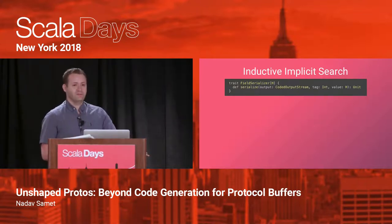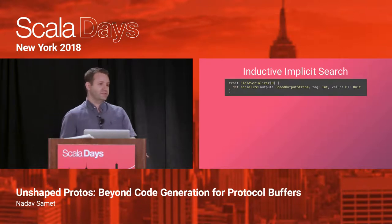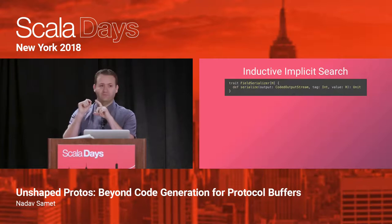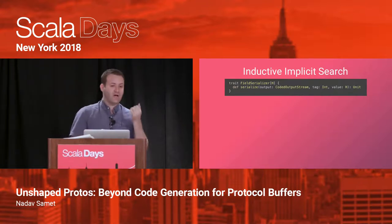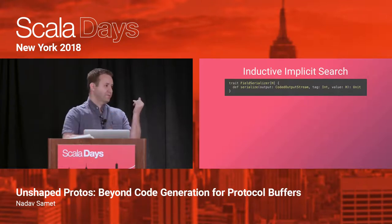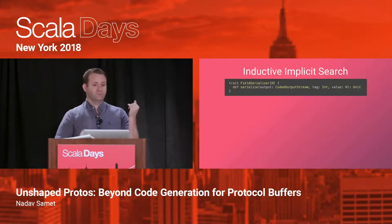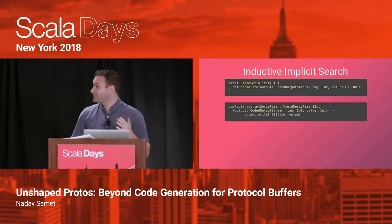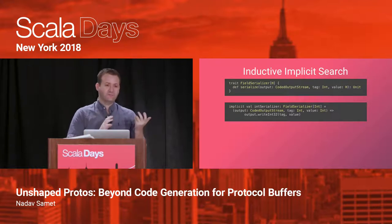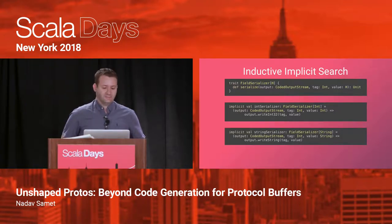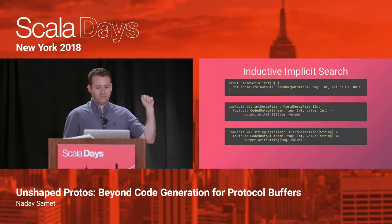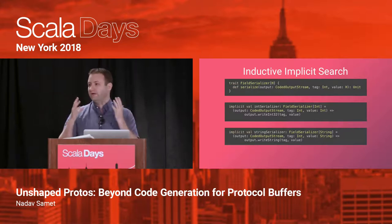Before we do that, I want to introduce another type class called FieldSerializer that takes a type parameter H. FieldSerializer is just a type class to serialize the primitives — strings, integers. It has a single serialize method that takes the output stream, a tag number (the running number for fields), and a single value of type H to be serialized. I can define an intSerializer that takes an integer and writes it to the output stream, and similarly a stringSerializer. These are tagged with the implicit keyword, so they'll be found when we compile and require a FieldSerializer of String or Int.